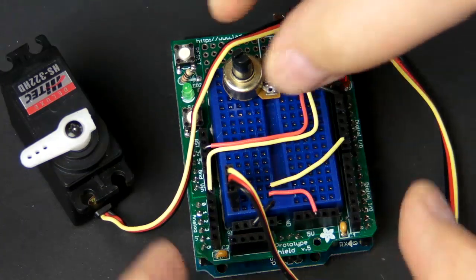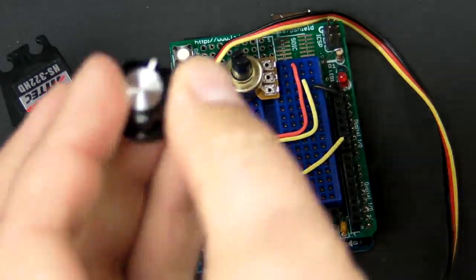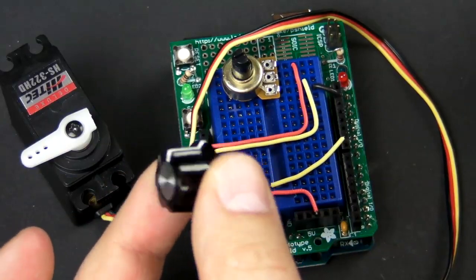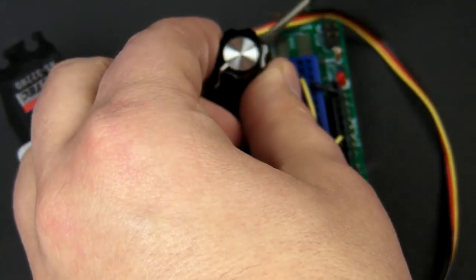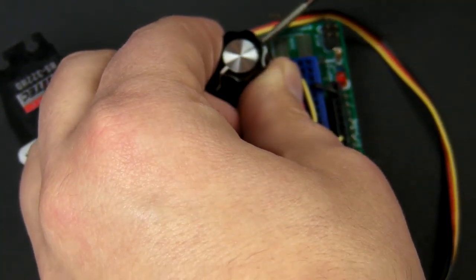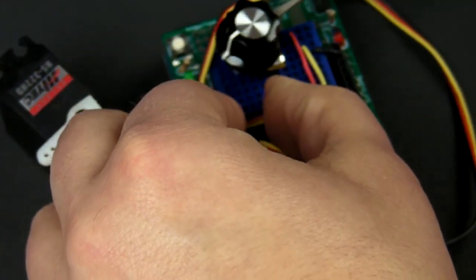One last thing to note, potentiometers, you don't need a knob on top, but you can pick these things up really cheap, literally under a dollar. I have this one laying around my studio, so I think I'll put it on there. And they have just a little set screw on the side, you can just screw them on, and it just makes it look cooler.